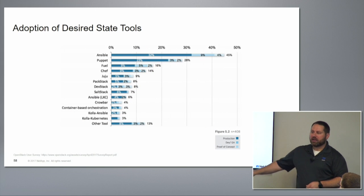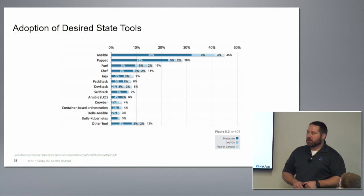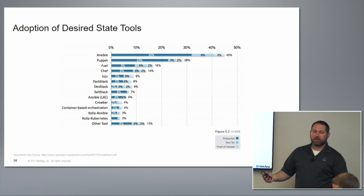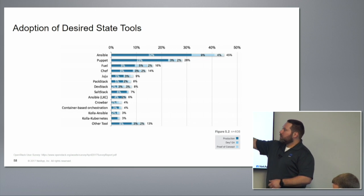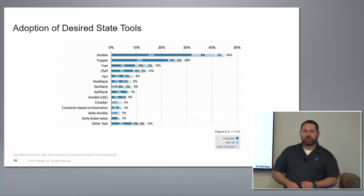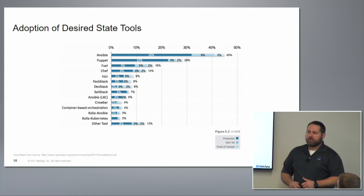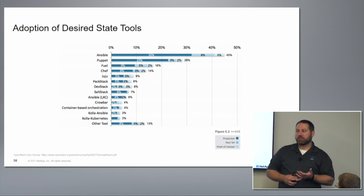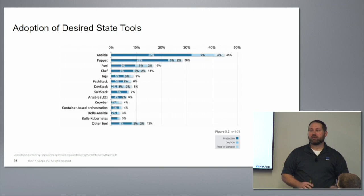How did we pick these three for our primary integrations? It was pretty obvious — this comes from the OpenStack user survey from April of this year. Ansible is far and away at the top. Red Hat has had significant success with Ansible, leveraging it for all their products: RHEL OSP, OpenShift, etc. Puppet and Chef come in at number two and number four respectively. Fuel is also on there, but it's really built on Puppet and primarily used for deploying OpenStack infrastructure, not applications built on top. Desired state configuration tools are but one part of the toolbox — all of these things work together to achieve the end outcome.